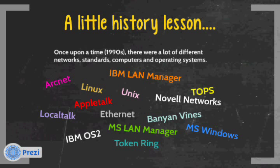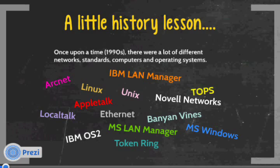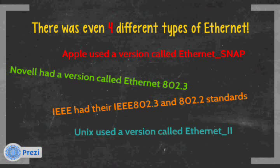We had operating systems like Linux and Microsoft Windows. We had different lower-level standards like Token Ring and Ethernet. Macintosh had AppleTalk and LocalTalk. There was IBM OS/2 and a network called ArcNet. So there were a lot of different networks — there were even four different types of Ethernet.